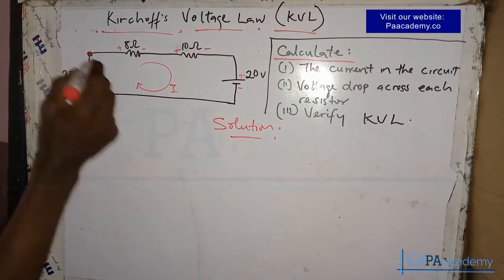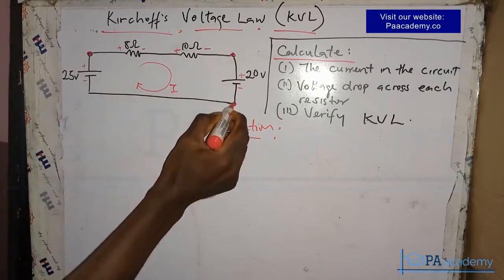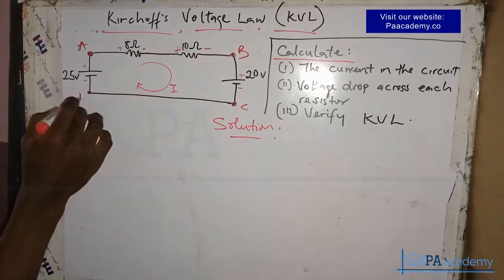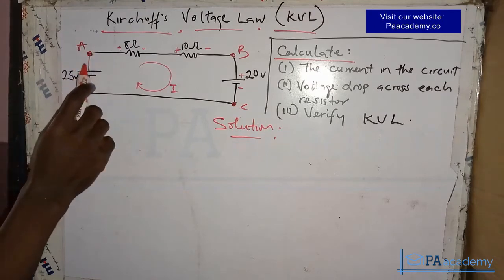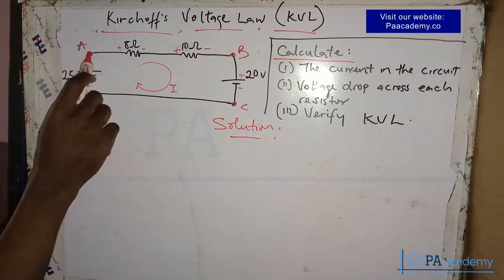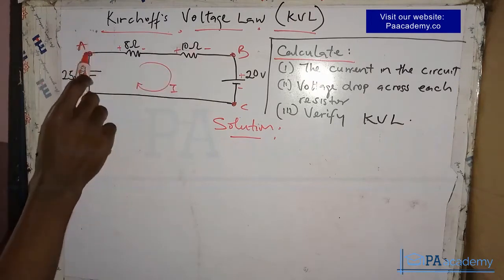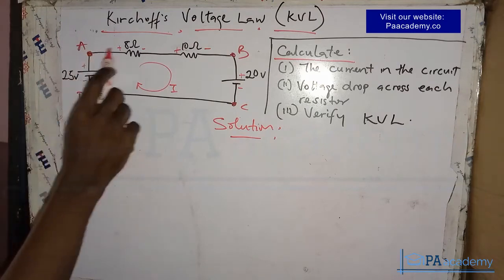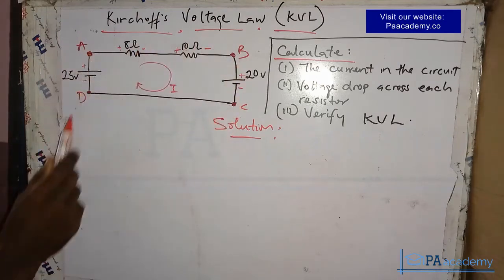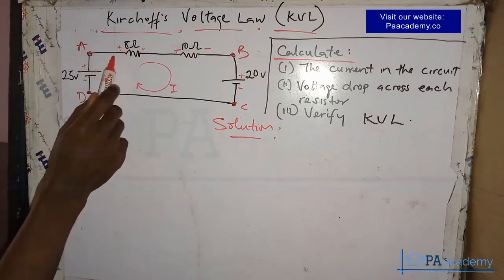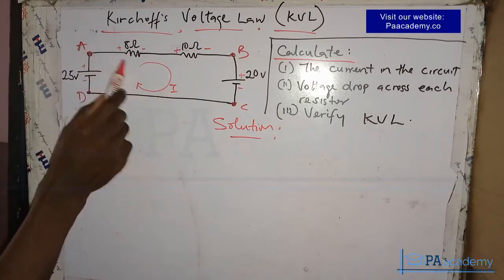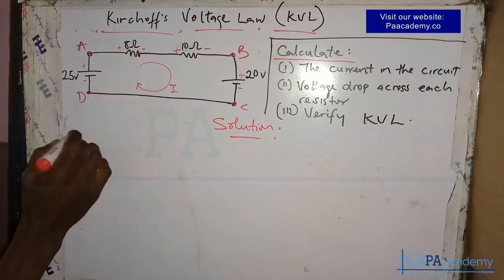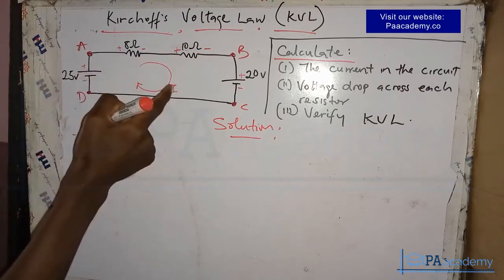Now let's label the nodes. Let's call them A, B, C, and D. Starting from node A and going around the closed loop A→B→C→D→A, we apply Kirchhoff's Voltage Law. Moving in the clockwise direction, we encounter the 8-ohm resistor first. The current through it is I (unknown), and moving from positive to negative gives us a term of 8 times I.